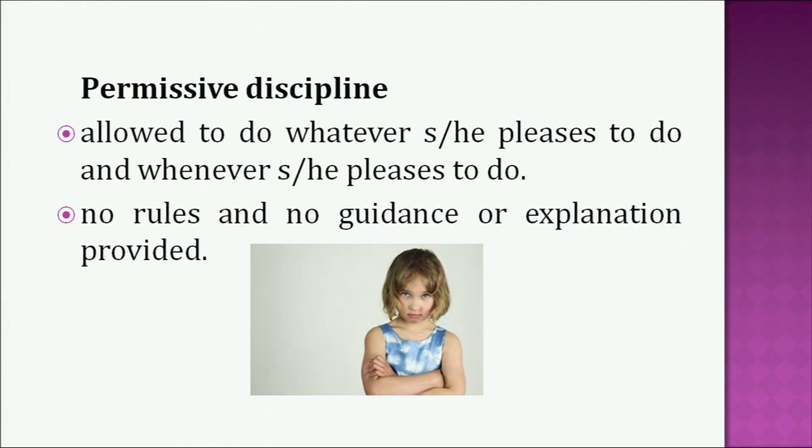Permissive discipline is exactly opposite to the authoritarian kind. In permissive discipline, the child is allowed to do whatever they feel like doing — whatever gives the child pleasure. There are no rules, no guidance, and no explanations provided. The children in this kind of discipline will get into the habit of not listening to anybody, not obeying any commands, and doing whatever pleases them. This type of behavior will make them self-centered and selfish. There would be no guidance from the caregiver, and children can also go astray or pick up wrong habits.